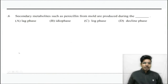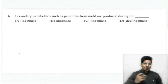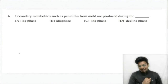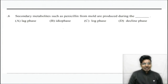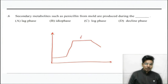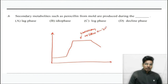Question number six: Secondary metabolites such as penicillin from molds are produced during which phase? It's an odd-one-out question — the answer is idiophase. Your stationary phase and idiophase are the same — this is where secondary metabolites are produced.